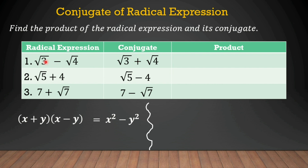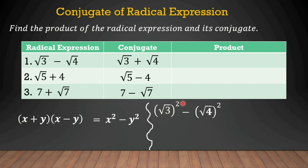Starting with the number 1 expression, we take the square of the first term: the square root of 3 squared. Then negative times positive equals negative, and the square of the last term: the square root of 4 squared. Simplifying — we cancel the index and the exponent, so 2 divided by 2 leaves us 3. Bring down the negative, then cancel for the second term, leaving 4. So 3 minus 4 equals negative 1. That is the product of our first expression.